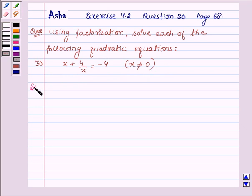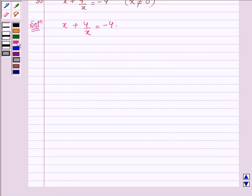Let us now start with the solution. The given equation is x plus 4 upon x equals minus 4. This can be written as x squared plus 4 upon x equals minus 4.